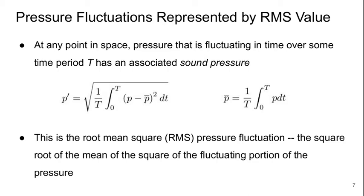The pressure fluctuations are often represented by their root mean squared value, or RMS value. At a point in space, if we have pressure fluctuating in time over some time period T, the associated sound pressure is the square root of the average of (P minus P-bar) squared, where P-bar is the time-average pressure, as shown in the mathematical definitions. We call this the root mean square pressure fluctuation — the square root of the mean of the squares of the fluctuating portion of the pressure.